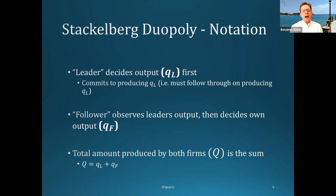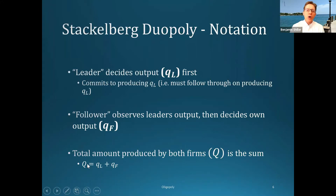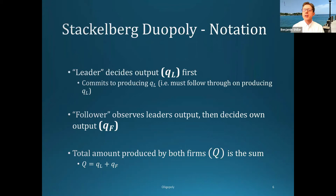The total amount produced in this market is just the sum of the amounts produced by the leader and the follower. We'll denote the total quantity with an uppercase Q, and this total quantity is what determines the market price. We assume the two products are identical, so we can use the inverse demand curve to figure out the corresponding price for that total quantity produced.